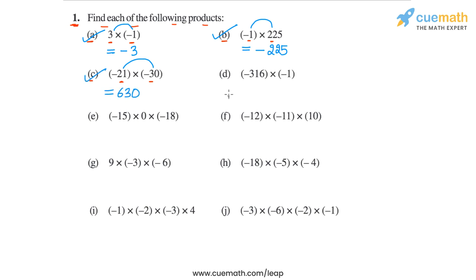Then in part D, we have the product minus 316 into minus 1. So the magnitude will be 316 into 1, or 316. And the sign of the product will be positive, since both integers are negative. So the product will be 316.